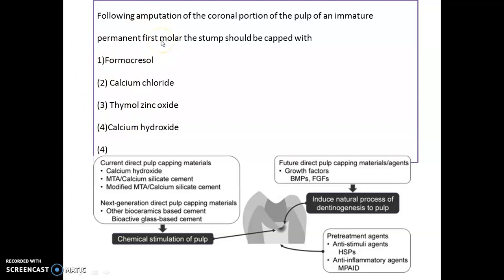What do you do if you have amputated the coronal portion of the pulp of an immature permanent first molar? The best material to cap that area is calcium hydroxide. If you remove the coronal portion of the pulp, it is a type of pulpotomy, most often done in the immature tooth as part of apexogenesis.